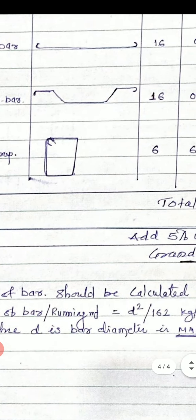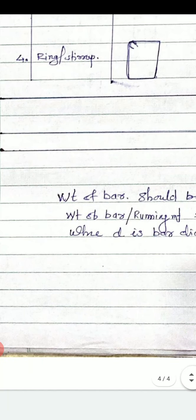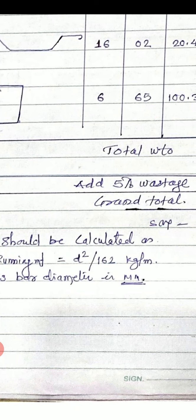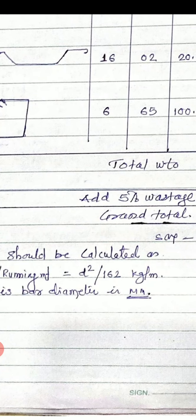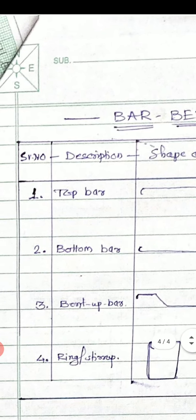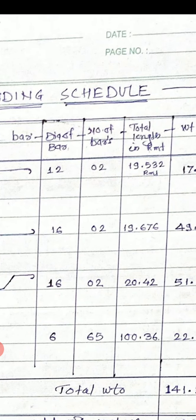To calculate the weight of bar, the formula is: weight per running meter equals D squared divided by 162 kg per running meter, where D is the bar diameter. For 6 mm bar it is 0.22 kg/m, for 8 mm bar it is 0.39 kg/m, and for 10 mm bar it is 0.69 kg/m.